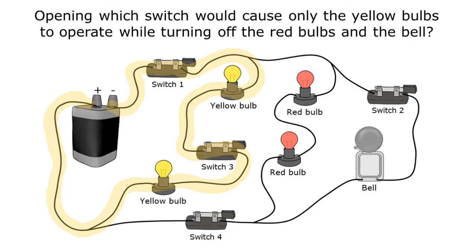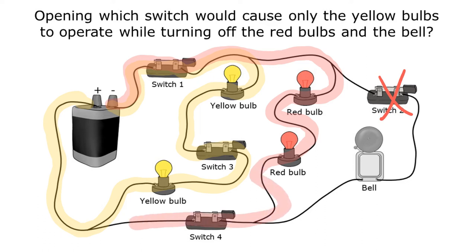Let's look at switches two and four. Opening switch two would turn off the bell, but notice I can still trace a path from one side of the battery through the red bulbs and through switch four back to the other side. So opening switch two would turn off the bell but still allow electricity to flow through the red bulbs — that can't be the right answer.